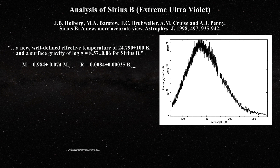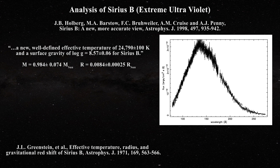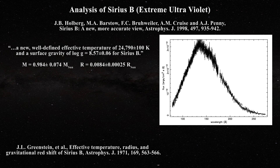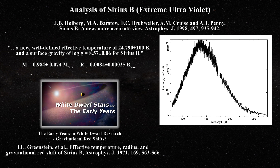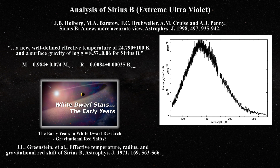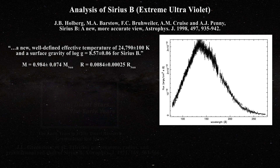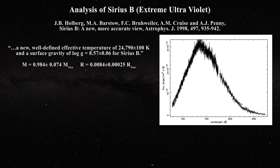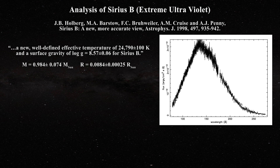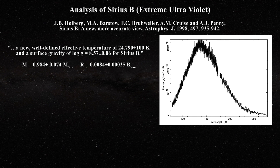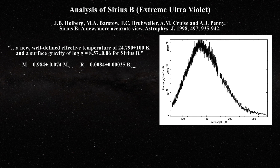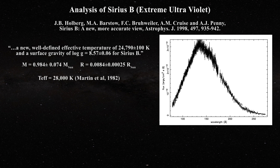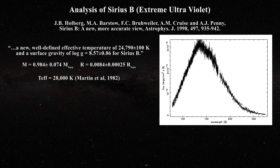They actually compute these values using the Greenstein et al. gravitational redshift obtained in 1971, which we discussed in our last presentation. Of course, problems with redshifts reported by Greenstein et al. were significant, as one recalls that the redshifts obtained were dependent on the lines used for analysis. Note what is happening with temperature: they now claim a well-defined value of 24,790 plus or minus 100 Kelvin, which is completely outside the range of the two previous determinations of 28,000 Kelvin by Martin et al. and 25,000 to 26,000 Kelvin by Perel et al.